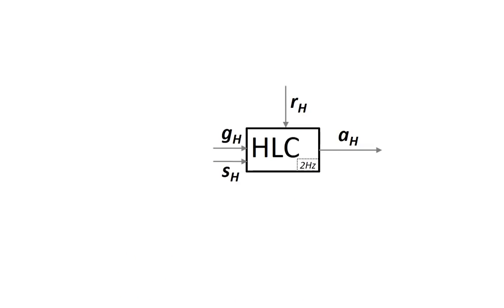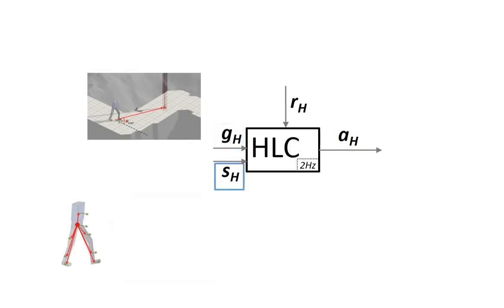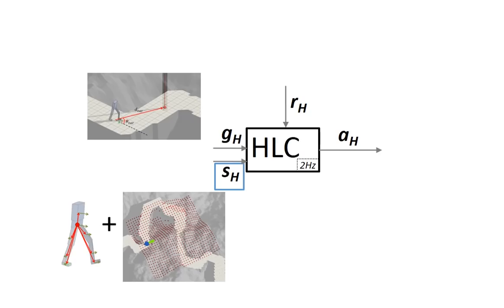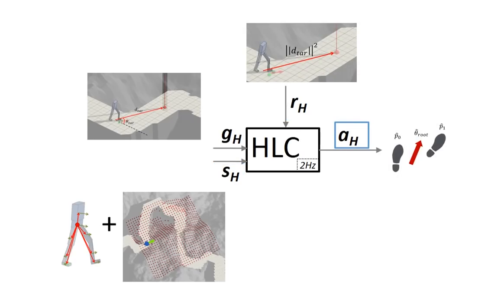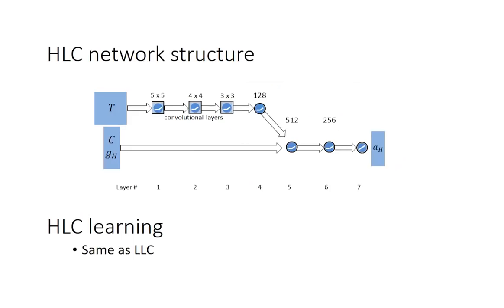The high-level controller inputs consist of a task-specific goal, the state of the character, and the surrounding terrain. It receives task-dependent rewards and outputs a short-term footstep plan for the low-level controller. The high-level controller is represented by a deep convolutional network and is trained using the same actor-critic framework as the low-level controller.